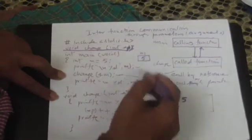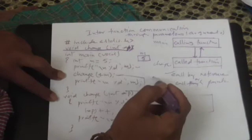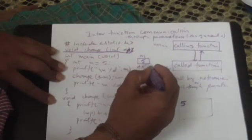So this variable p can hold addresses of integer kind of variables. So here in your calling function, I mean our main function, m is a variable. Let us say its address is somewhere in ab5.